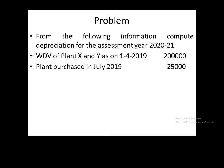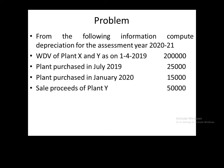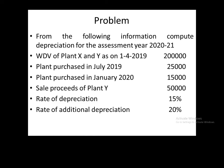Plant purchased in July 2019 for 25,000 — since July is more than six months before March 31, full depreciation applies if it has not been sold. Another plant was purchased in January for 15,000 — January, February, March, that is only three months, less than six months, so full depreciation cannot be charged. Sale proceeds of plant Y is 50,000. Rate of depreciation is 15%, and rate of additional depreciation is 20%.